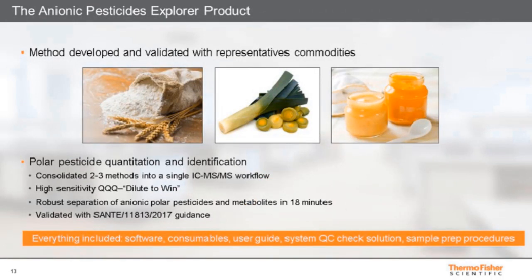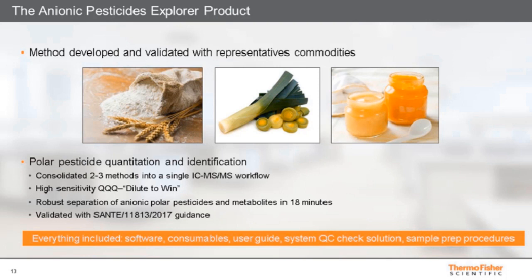The method was developed with representative commodities: wheat flour as an example of a dry commodity, leek for high pigment content, and baby food fruit-based as an example of a challenging matrix. All validation was done using European SANTE regulatory guidelines. The method consolidates the determination of polar and ionic pesticides into a single analysis, increasing productivity and reducing cost. The workflow is provided with a system suitability check standard, and the software includes preloaded acquisition methods, data processing, and reporting templates. For the triple-quad MS, all SRM transitions are optimized and preloaded into the software with relative collision energies and other MS parameters. The system also includes a detailed deployment guide for fast implementation and ongoing optimum performance.